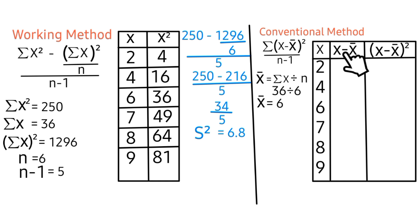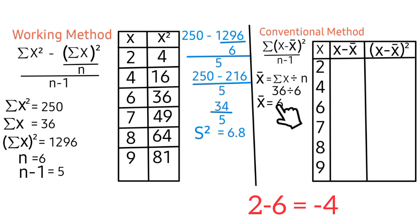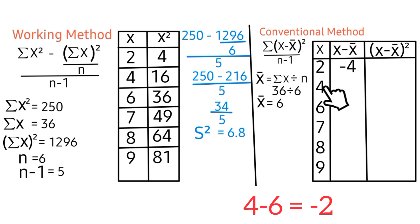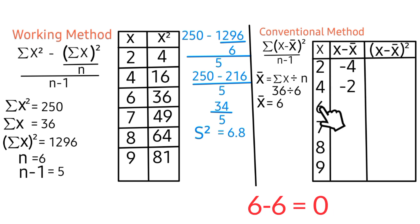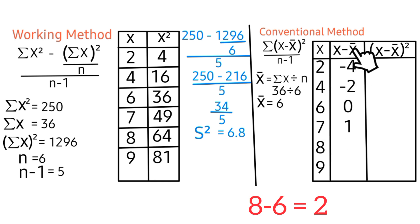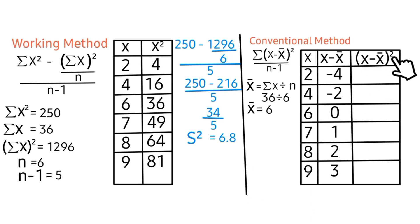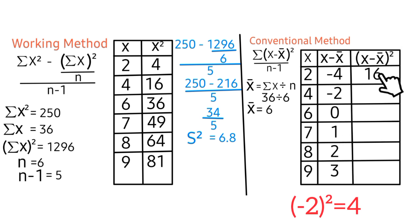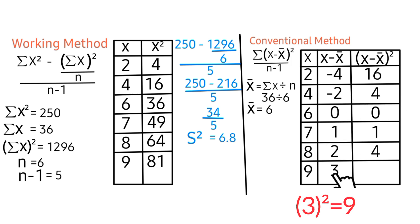Now let's fill the x minus x̄ column. Each x value minus the mean of 6: 2 minus 6 = −4, 4 minus 6 = −2, 6 minus 6 = 0, 7 minus 6 = 1, 8 minus 6 = 2, 9 minus 6 = 3. Now for the (x minus x̄)² column, we square each of these values: (−4)² = 16, (−2)² = 4, 0² = 0, 1² = 1, 2² = 4.